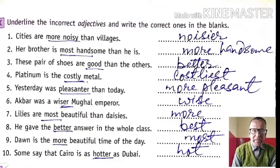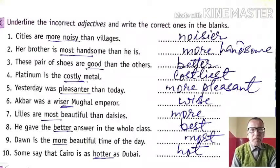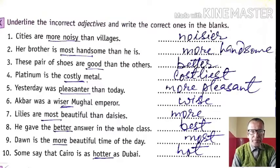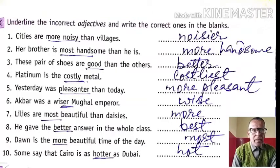Now we will see another segment: underline the incorrect adjectives and write the correct ones in the blanks. Before dealing with that, we use the comparative form when 'than' is used. Where 'the' or 'as...as' is used, we use the positive form or positive degree.